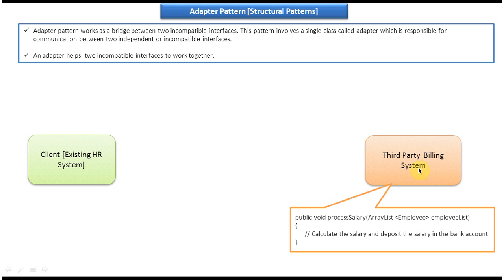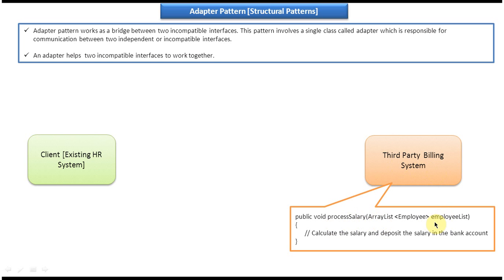The third-party billing system has one functionality called process salary. It accepts an array list of employees. What this method does is it takes the employee list, iterates through it, gets each employee, calculates the salary of each employee, and deposits that employee's salary into their bank account.